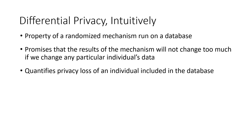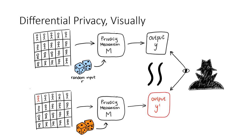In order to do this, differential privacy compares the results of running this privacy mechanism on a database and then on another database in which the data of only a single individual is switched. The thought here is that if the outputs of this privacy mechanism don't depend too much on the data of this one particular individual, then seeing this output won't be able to tell us too much about this individual's data, thereby preserving their privacy.